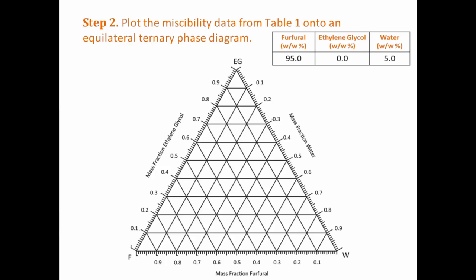For example, the first point has a composition 95% furfural, 0% ethylene glycol and 5% water. To plot the composition of furfural, find 0.95 on the axis labelled mass fraction of furfural.